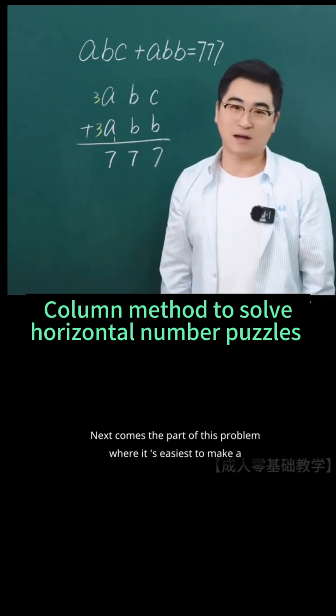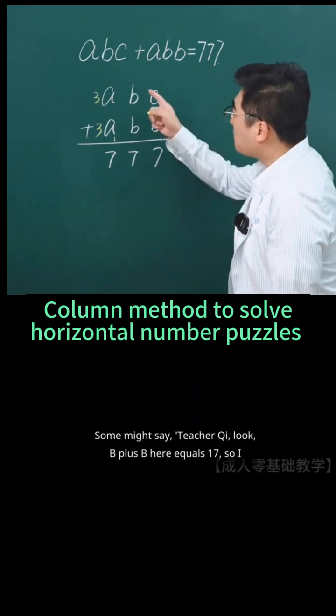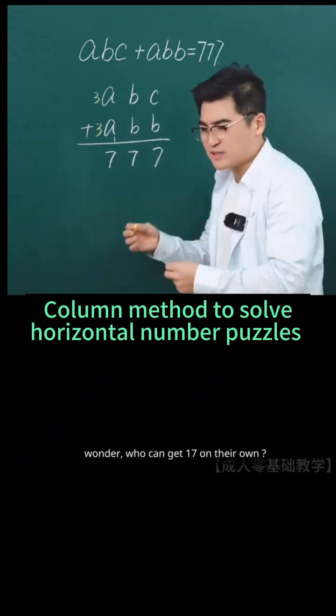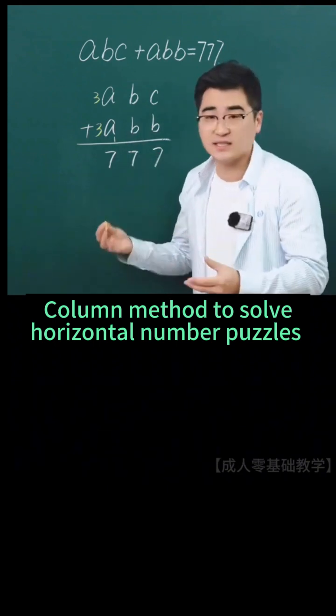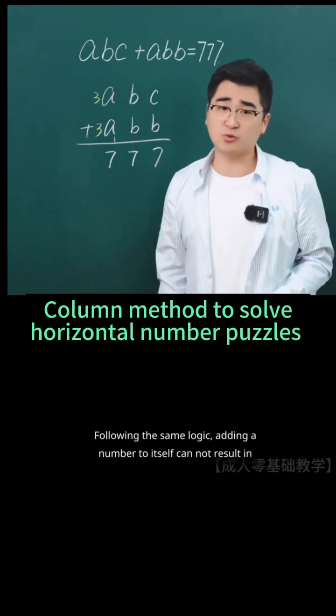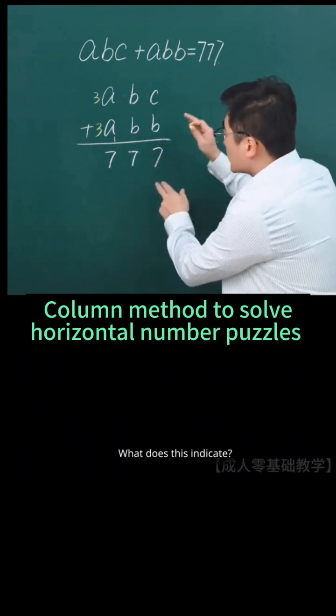Next comes the part of this problem where it's easiest to make a mistake. Some might say, Teacher Chi, look, B plus B here equals 17. So I wonder, who can get 17 on their own? Following the same logic, adding a number to itself cannot result in an odd number.